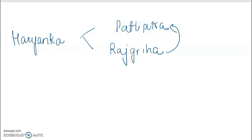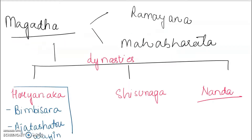Now we are going to move on to the second dynasty, that is Shishunagas. The first important ruler was Shishunaga — the dynasty has been named after the name of the king. And the second one was Kalashoka.